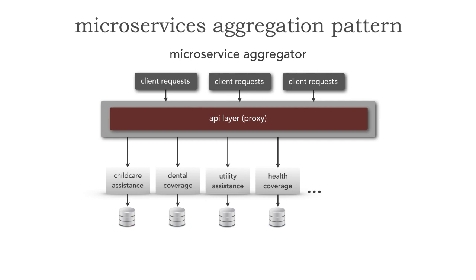Therefore, it makes a really good model for microservices. There are 140 of these benefits right here, and so this works well until we get this kind of request.